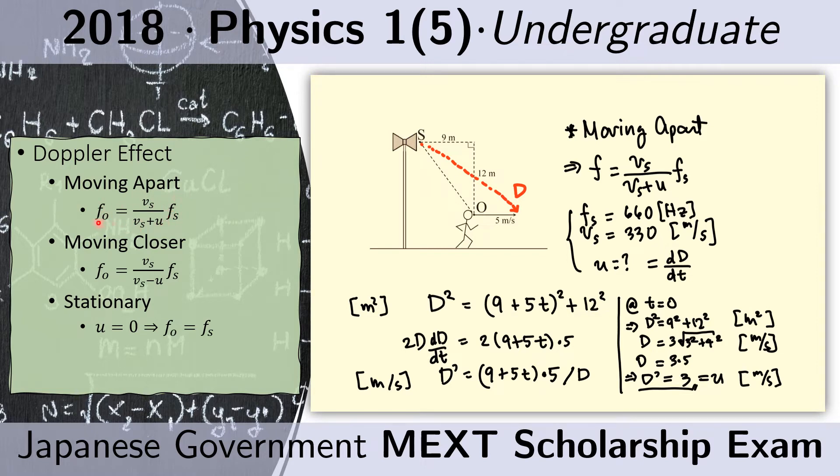The frequency as observed by the observer would be given by this. That's the sound speed over the speed of sound plus the relative speed between the observer and the speaker. We need to find this ratio and multiply that with the original frequency of the sound.